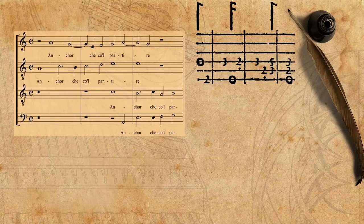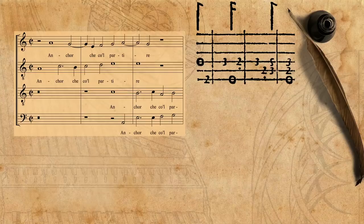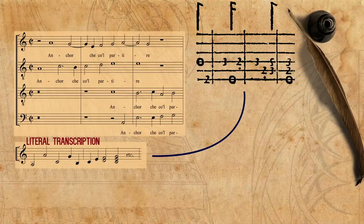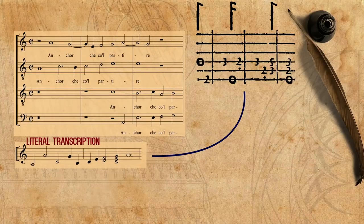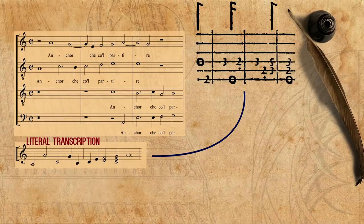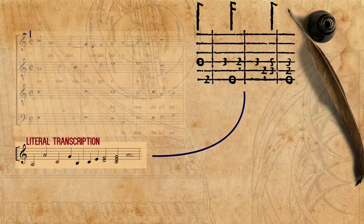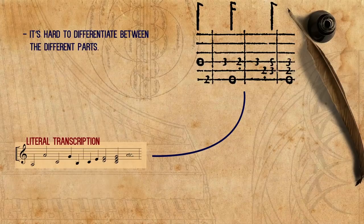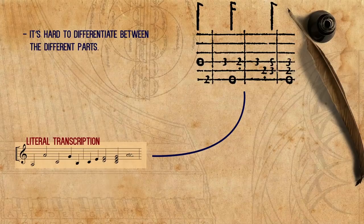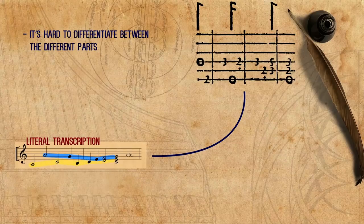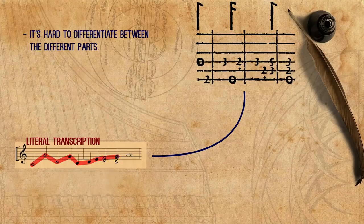Let's see what its lute intabulation looks like when transcribed literally. The challenge that this efficient notation system brings when dealing with polyphonic music is that it's hard to differentiate between the different parts. There is no indication of which part each note belongs to — are we looking at several parts, or just one strange melody?